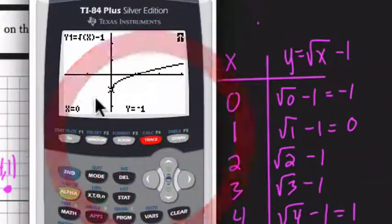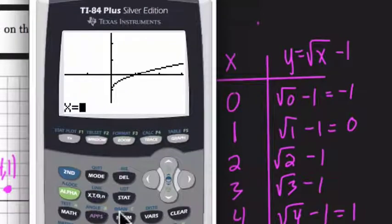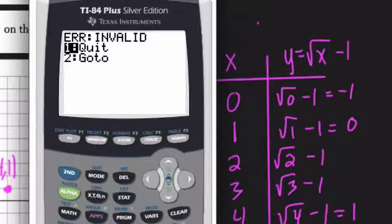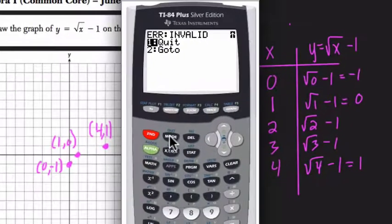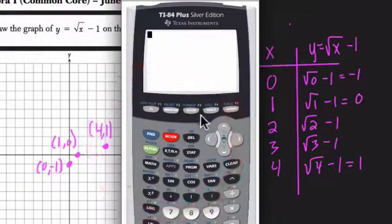Now if I try to hit second calc and then I hit value again and try to hit 4, I'll get an error. The reason I get an error is because that is beyond the window that we're looking at, which I do admit is really frustrating and kind of lame. But here, if we want to fix that, we can zoom out.